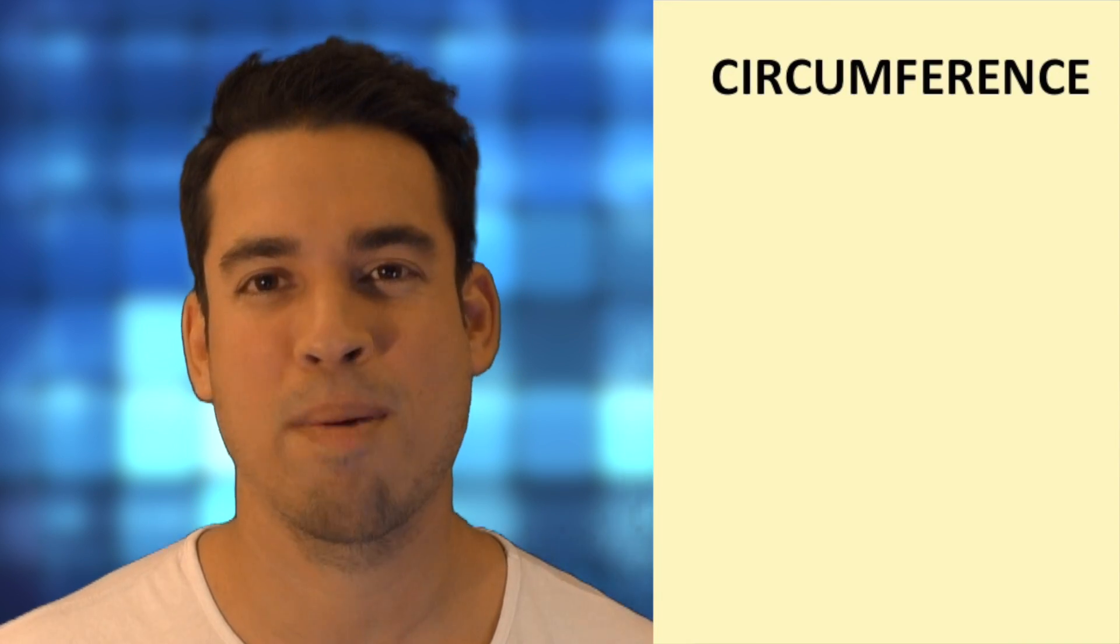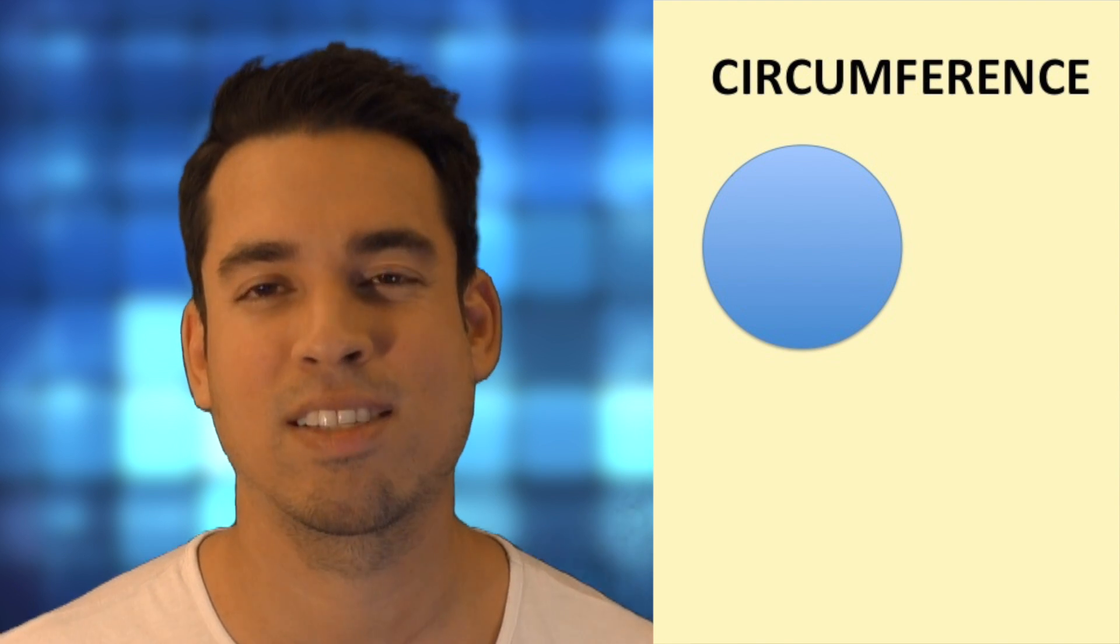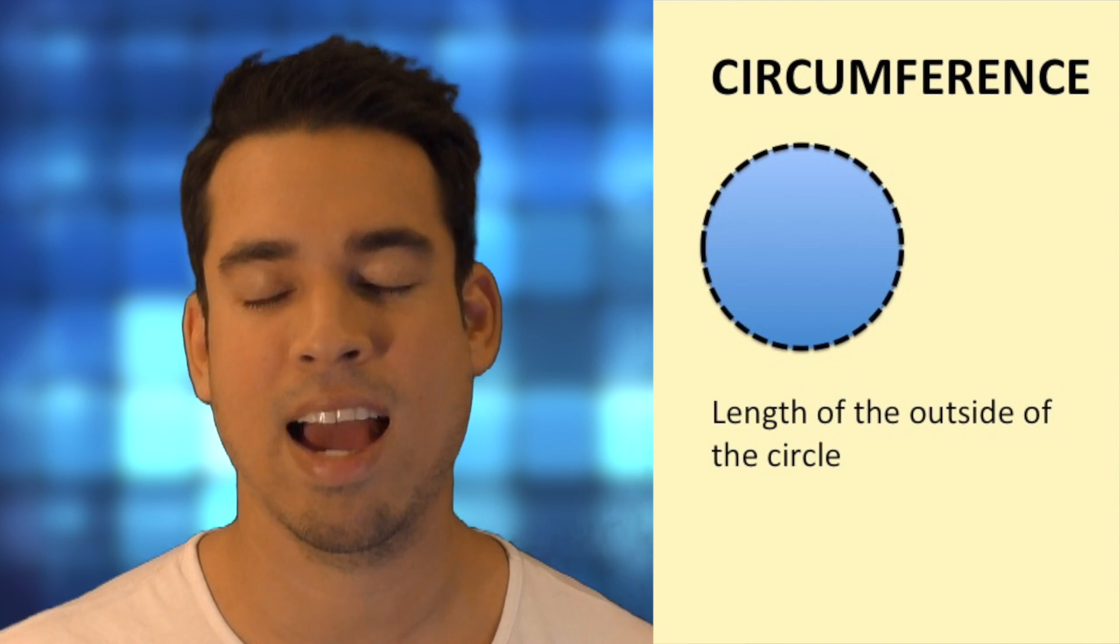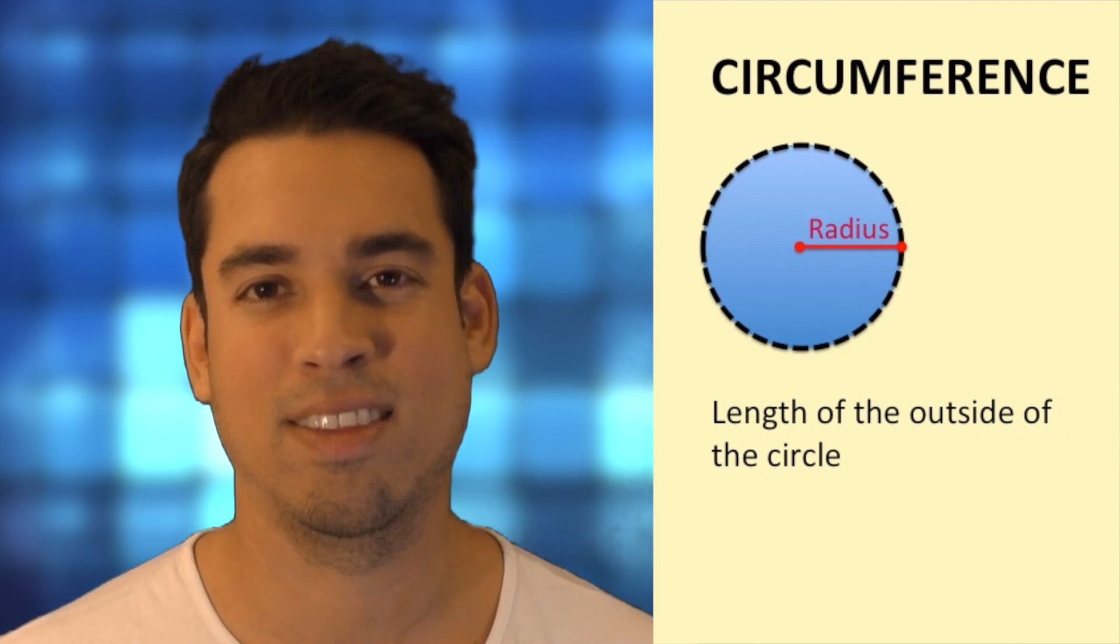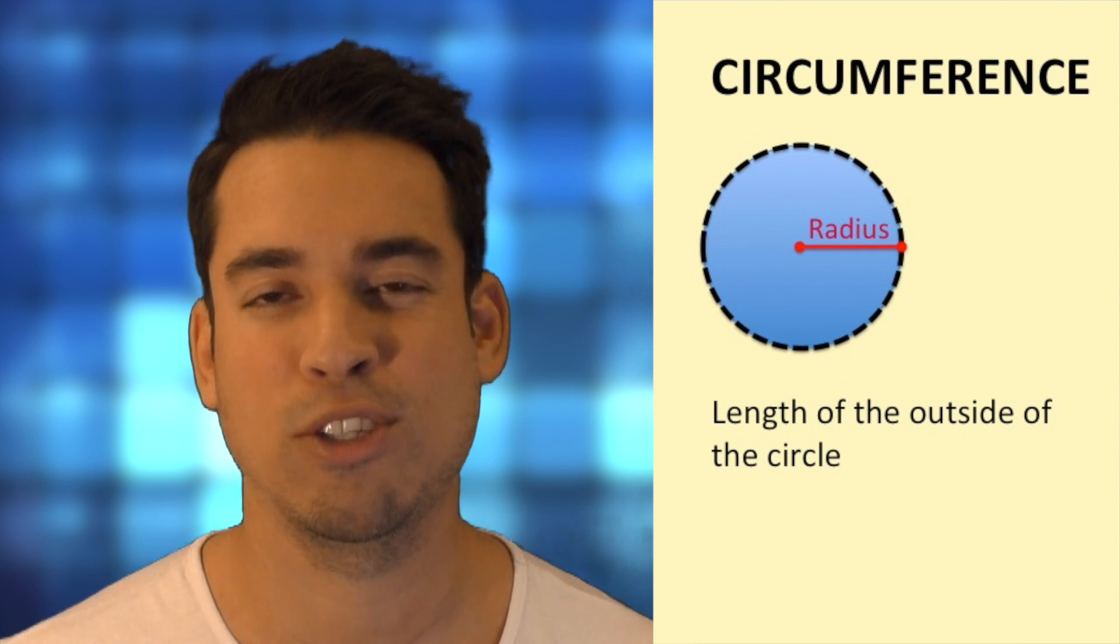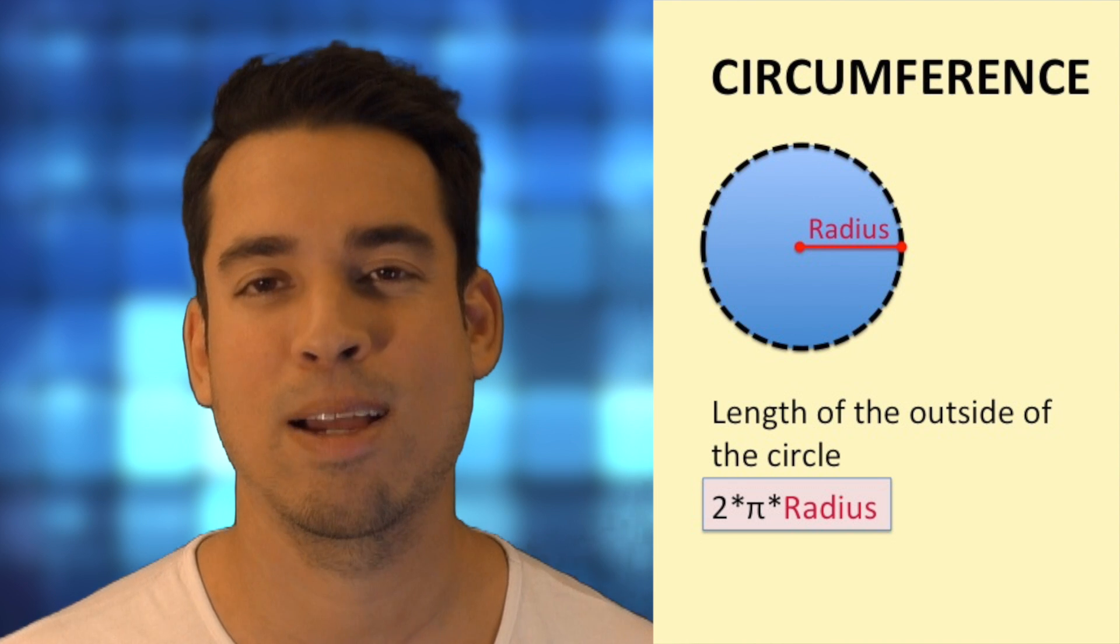Next, let's talk about circumference. So circumference is simply the length of the outside of the circle, and the way we calculate that, you should definitely know this formula, it is simply two times pi times the radius.